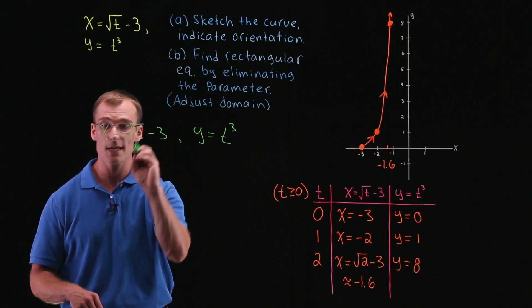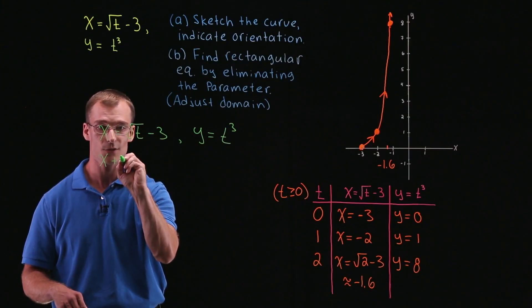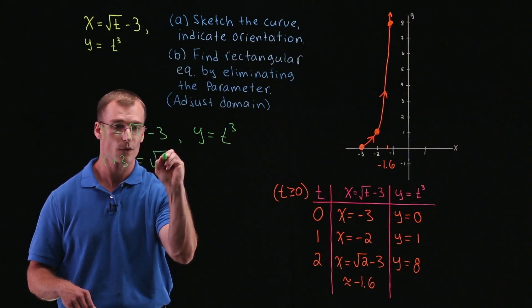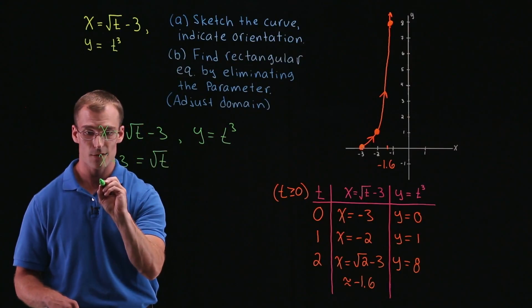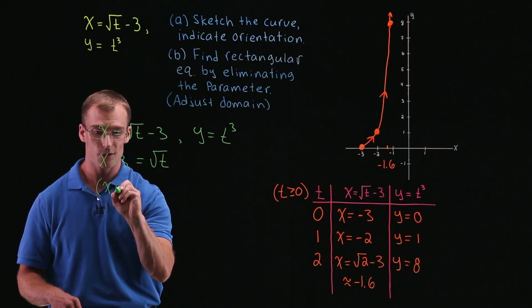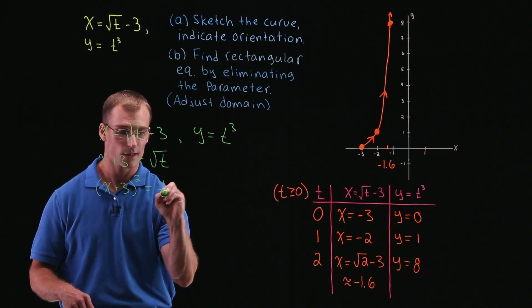So solving for t, well, we're going to have adding 3 to both sides x plus 3 is equal to square root of t. And then squaring both sides, we'll have x plus 3 quantity squared is equal to t.